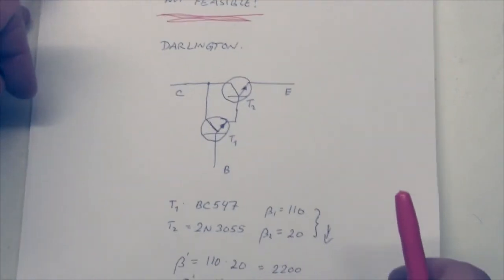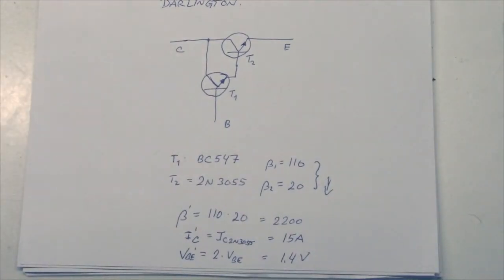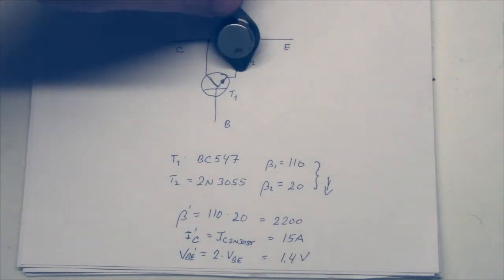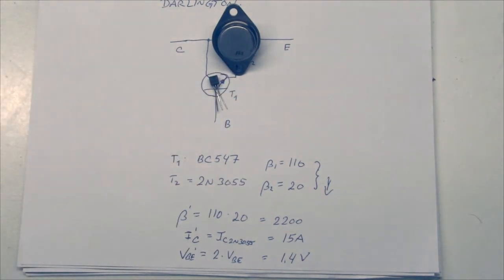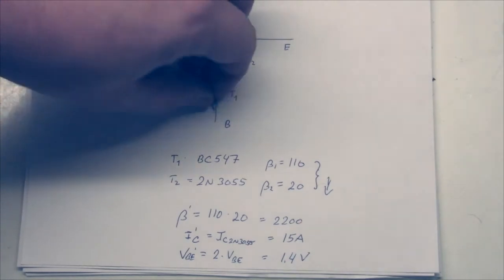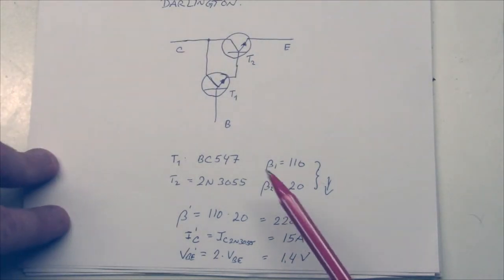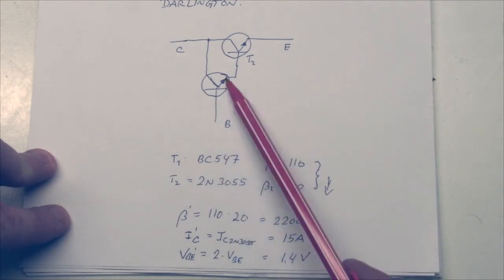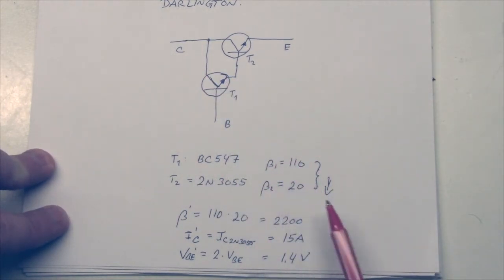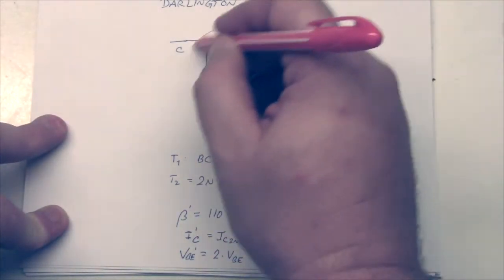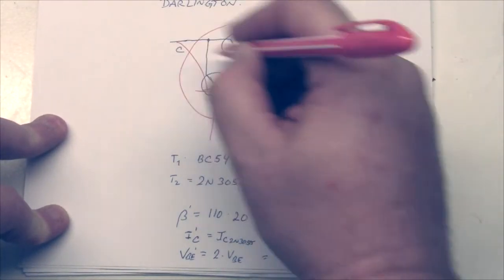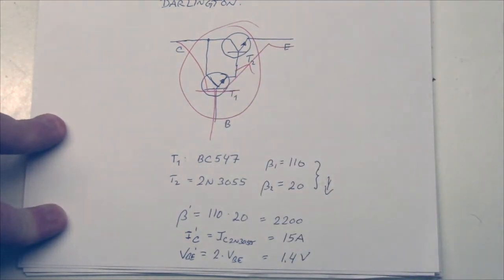But the solution is straightforward. There was a guy called Darlington who invented this configuration. Basically what you can do is you can put the big transistor here to handle all the power, and then you can take the little one to handle the current into the base of the big one. Basically what we have now, we have a BC547 as the little driver guy here. It has a beta of about 110, worst case. And the big power transistor, the 2N3055, has a beta of 20.